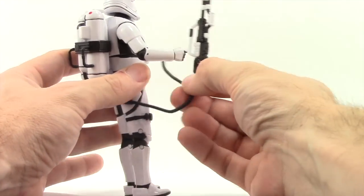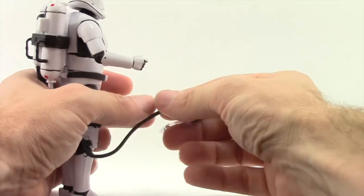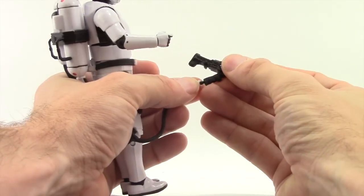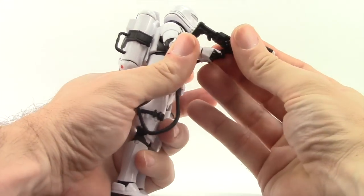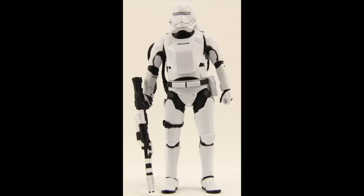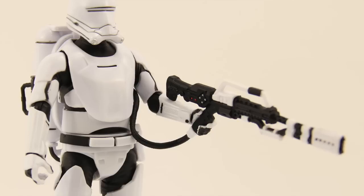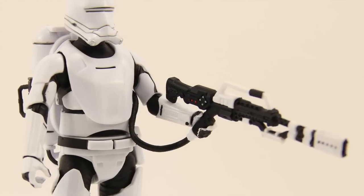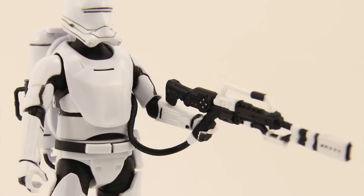The hose is plenty long enough to attach to the rifle and have the figure hold it in either the right or left hand.